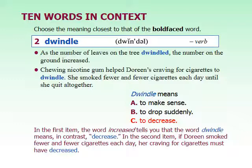Dwindle can also be used for things like money — the money in your bank account dwindled means it slowly got less and less. The two important parts to remember are that it decreases or shrinks, but it's gradual — it's not sudden.